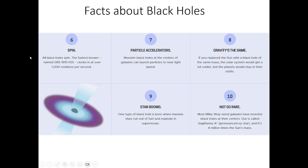Number six, spin. All black holes spin. The fastest known, named GRS, this number, clocks in at over 1,000 rotations per second.